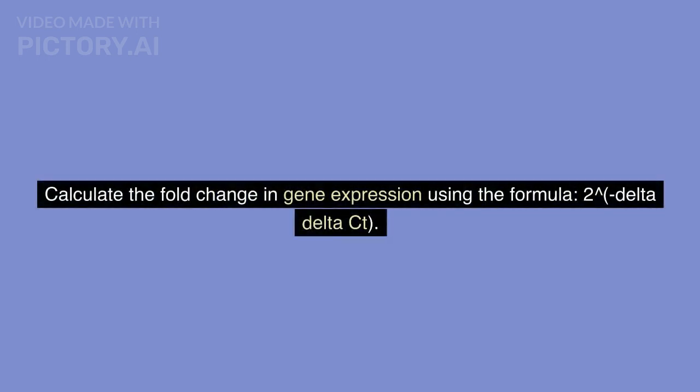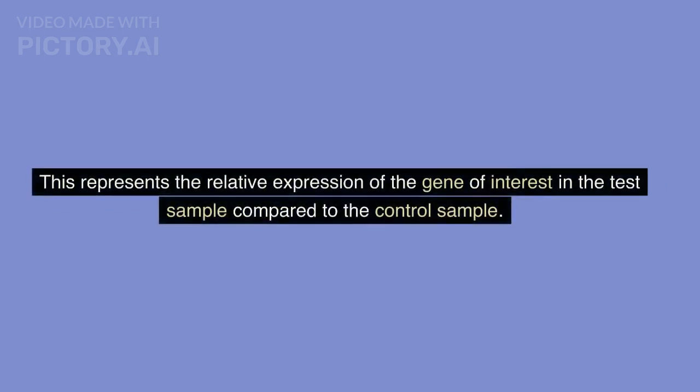Calculate the fold change in gene expression using the formula 2^(-ΔΔCT). This represents the relative expression of the gene of interest in the test sample compared to the control sample.